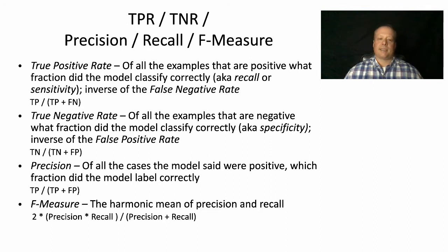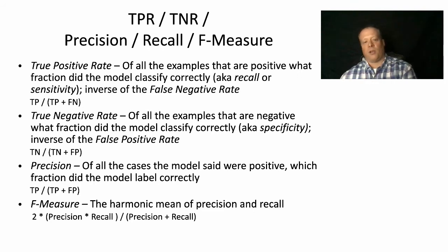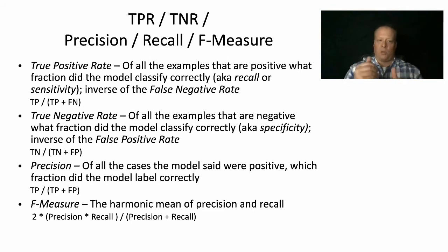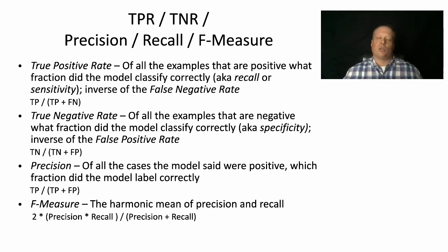Precision is another term from the information retrieval literature. It asks: of all the cases that a model said were positive, what fraction did the model label correctly? That's the number of true positives divided by (true positives plus false positives). Precision and recall approach the problem from two different angles — precision asks 'of the ones I call positive, how many am I right on?' while recall asks 'of all the positives that exist, how many do I identify correctly?' It's common to combine them using the F-measure, which is the harmonic mean of precision and recall, giving a single number to compare across models.